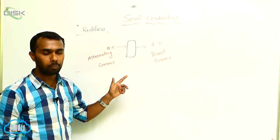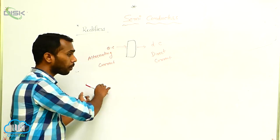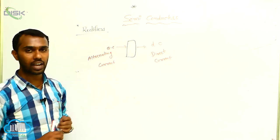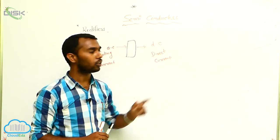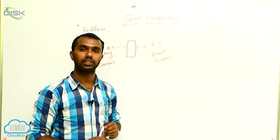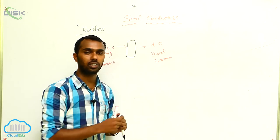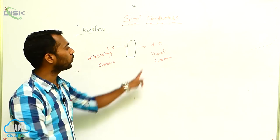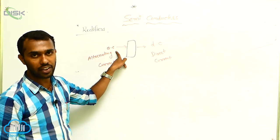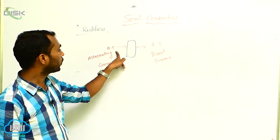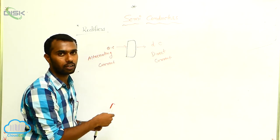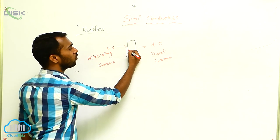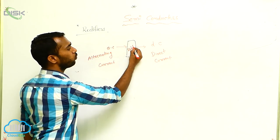Why do we have to convert? In our homes, we get AC current from the transformer. But all our electronic gadgets work using direct current. Take a mobile charger — the mobile phone charges using direct current, not AC current. So we have to convert AC into DC, and in this conversion process we require a device. This device is called a rectifier.